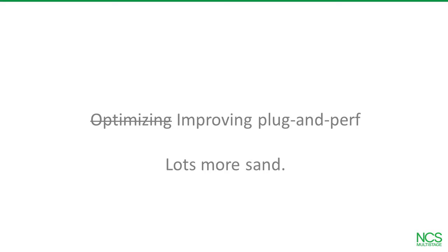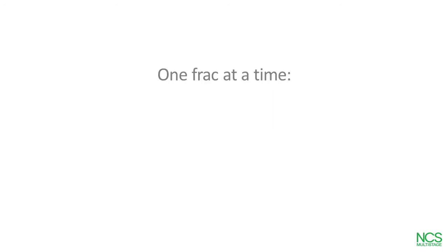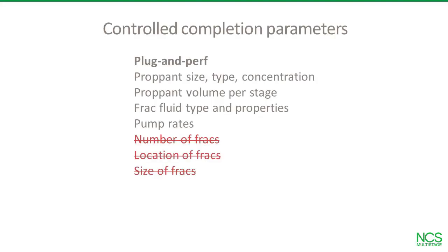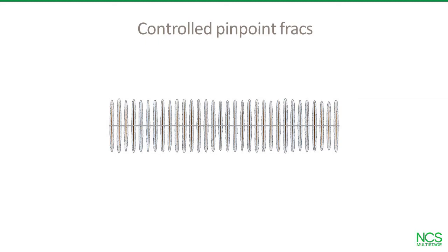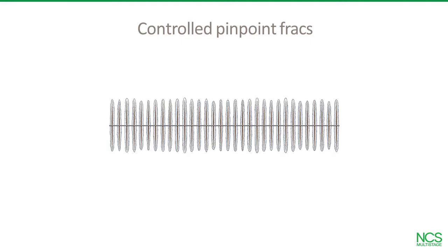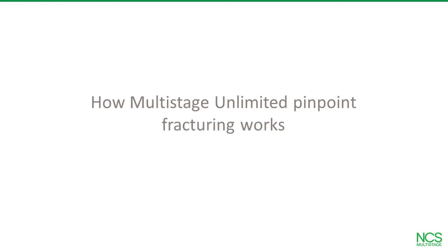Now let's look at multi-stage unlimited pinpoint fracturing — the optimizable completion. Unlike multi-cluster plug-and-perf, pinpoint fracturing executes completions one frack at a time in a predictable, verifiable, repeatable process. What you can't control with plug-and-perf, you can control with pinpoint fracturing. Your first completion will look a lot like the design, with controlled fractures distributed equally along the lateral. Each subsequent completion looks about the same — an optimized four-well section is covered with equally spaced fractures of equal propped volume. This repeatable frack network lets you execute and evaluate completion and field development strategies with confidence — we call this controlled optimization.